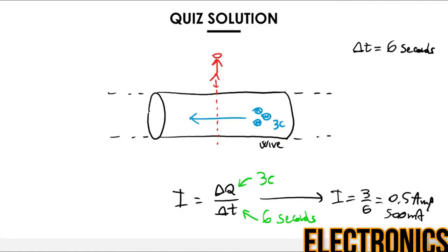The next question asks you to determine the direction of the current, which is 0.5 Amps or 500 mA, but could be going from left to right or right to left. Determining the direction is straightforward: conventionally, current always moves in the same direction as positive charges. In this example, the net charge is 3 Coulombs, which is a positive amount of charge moving from right to left. Therefore, the current is also going from right to left — 500 mA moving from the right side of the wire to the left side.